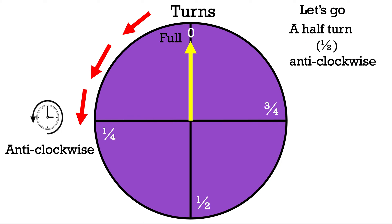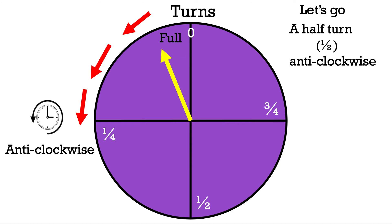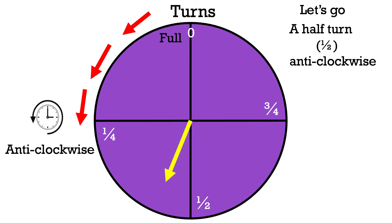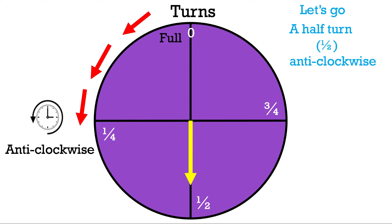Let's go back to the starting position and do a half turn anticlockwise. Anticlockwise means we go to the left. The spinner moves past the quarter turn and stops at a half turn in the anticlockwise direction.